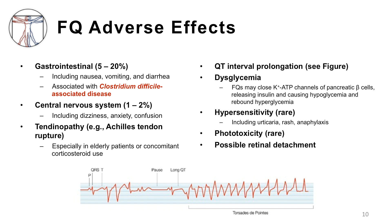Tendinopathy may occur, which might include tendon defects as well as overt tendon rupture — for example, the Achilles tendon might rupture even after a short course of fluoroquinolone therapy. This is especially observed in elderly patients or with concomitant corticosteroid use. Fluoroquinolone-associated prolongation of the QT interval — the interval between the Q wave and the T wave on the electrocardiogram — is very important, as this can lead to arrhythmias, including the life-threatening arrhythmia torsade de pointes, as seen in the figure. Dysglycemia, or altered blood glucose levels, is due to fluoroquinolone-mediated closing of pancreatic beta cell potassium channels and may include both high and low blood glucose.